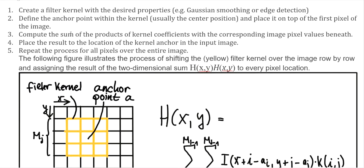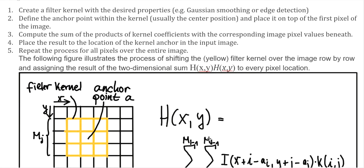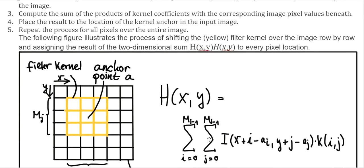To apply the Gaussian filter to reduce noise, follow these steps. First, create a filter kernel with the desired properties. Second, align the anchor point of the kernel with the first pixel of the image. Third, compute the sum of products using the formula — the sum of products of the kernel coefficients with the corresponding image pixel values. Fourth, place the result at the location of the kernel anchor in the output image. Then repeat the process for all pixels in the entire image.